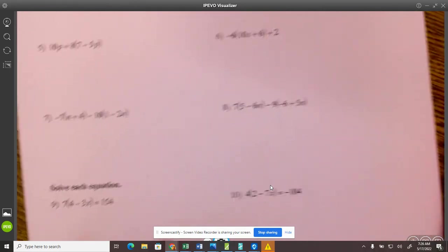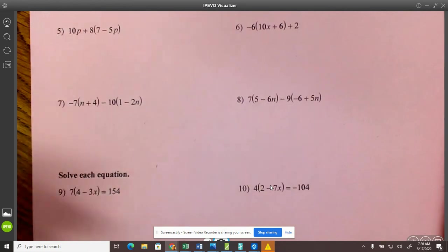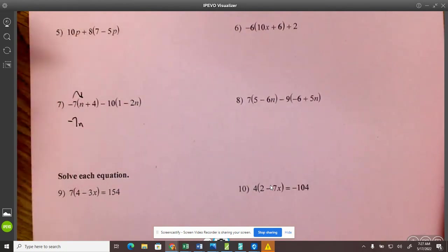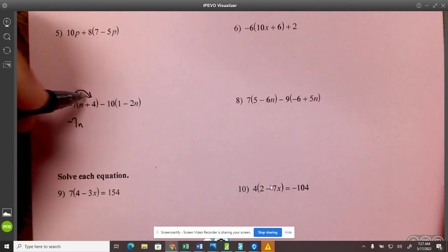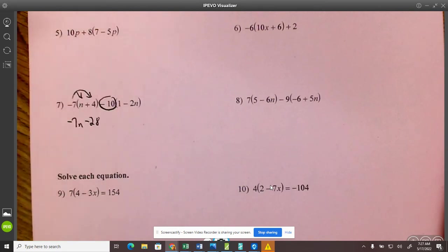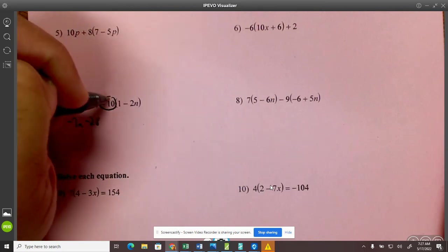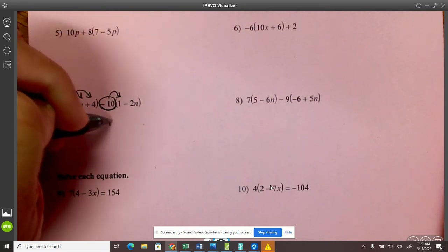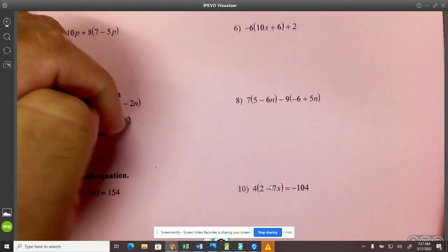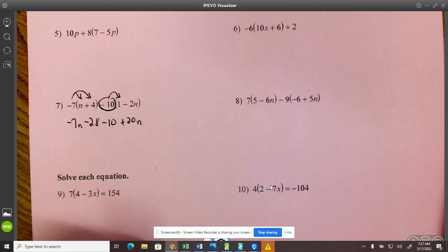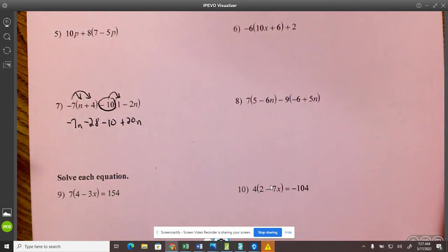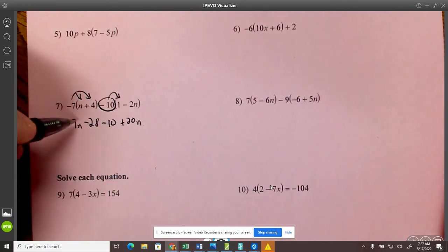Now let's look at one of these longer problems like down here at number 7. So I have to distribute twice. Negative 7 times n, negative 7n. Negative 7 times 4 is negative 28. Now you have to do this whole thing. This is a negative 10. So negative 10 times 1 is negative 10. Negative 10 times negative 2n is positive 20n. Again, if you're slowing down or you worry about the numbers, be sure and use the calculators.